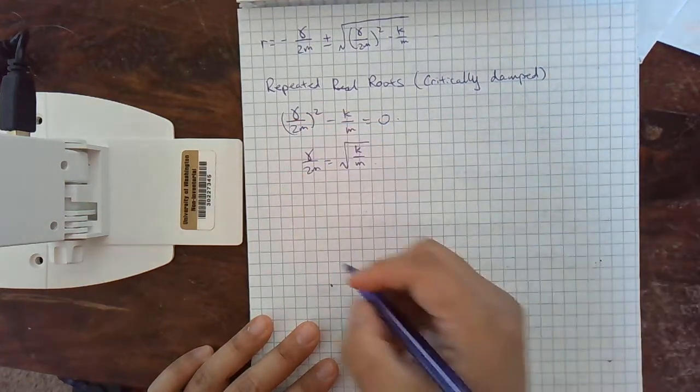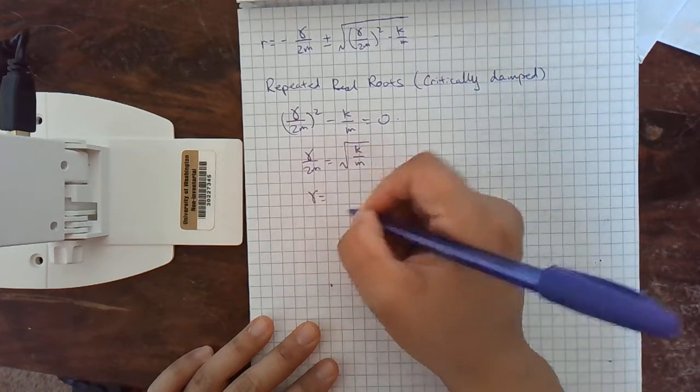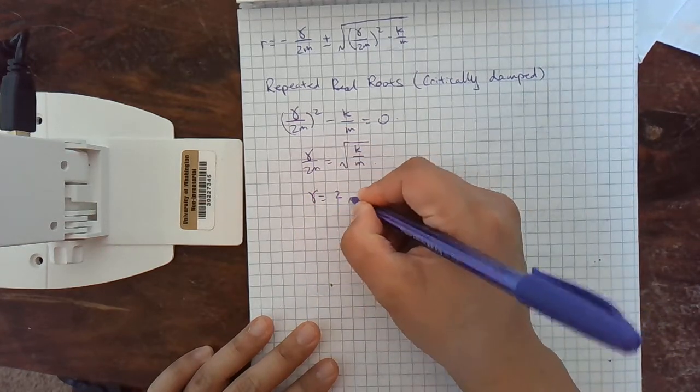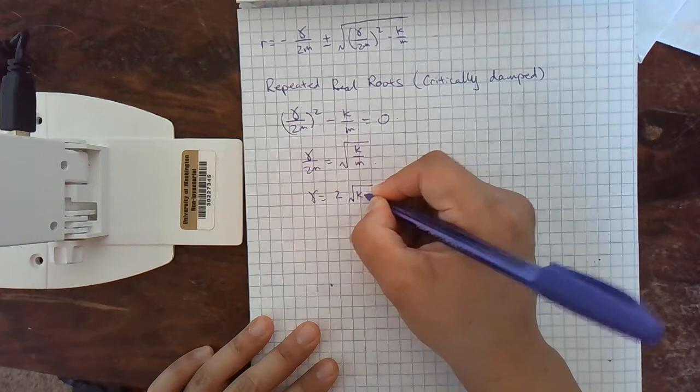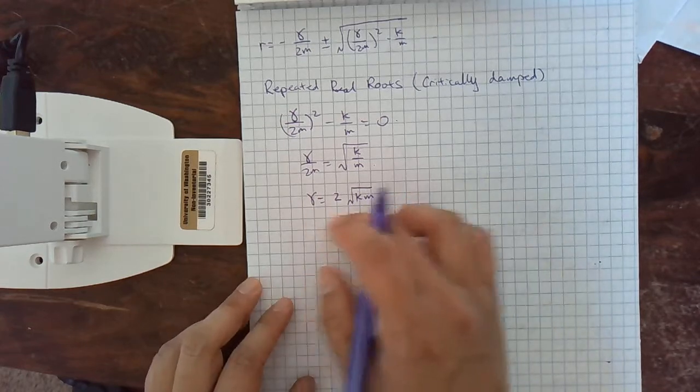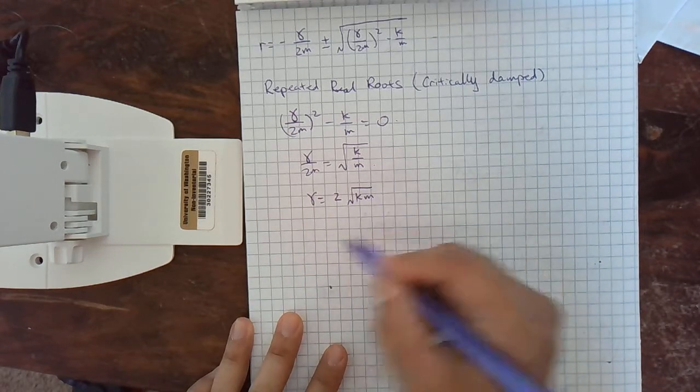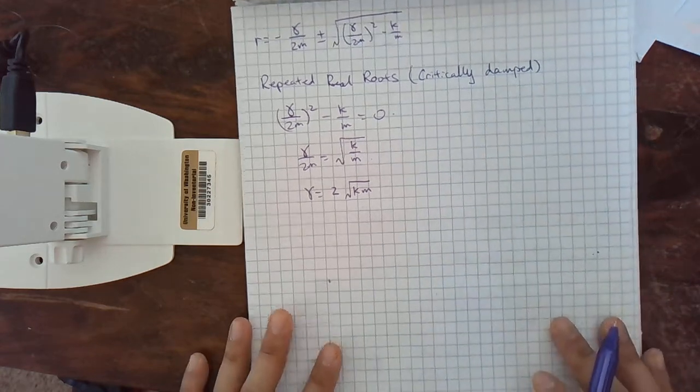Again, all of these constants are positive, so we don't need to worry about signs. And we can actually solve for gamma. So the damping constant is 2 times the root of km. So if the damping constant is exactly related to the spring constant and the mass in this way, then we're going to get a critically damped case.